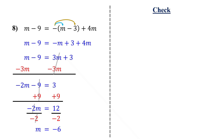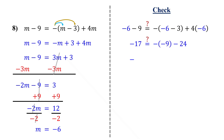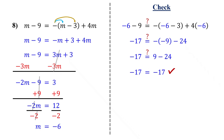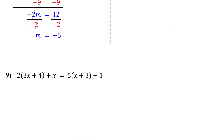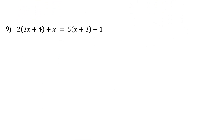To check, plug in negative 6 back into the original equation and simplify. If you have any questions, please feel free to leave them in the comments below. All right, let's move on to a new equation — this one's got parentheses on both sides.